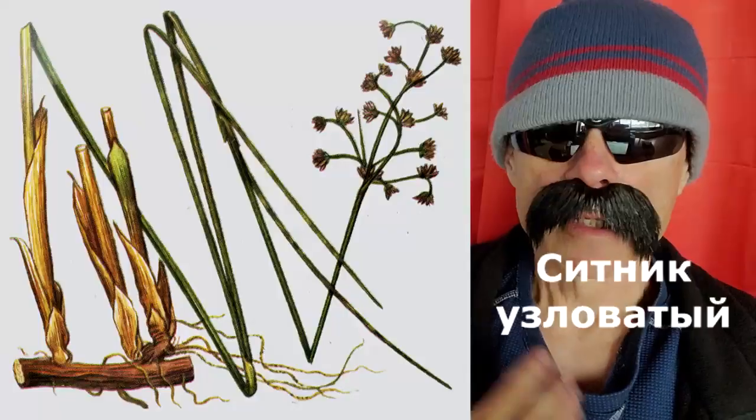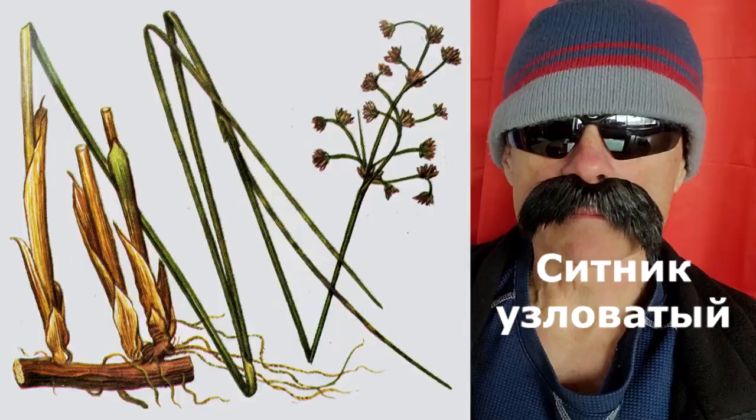Moving on, it should be noted that only one member of the Rush family appears in the Red Book, and that is Sitnik Uzlovatiy. Oddly enough, there are no members of the Cattail family listed in the Red Book. This is probably because the Red Book lists rare and endangered plants, and Cattails tend to be rather hardy, if not invasive.